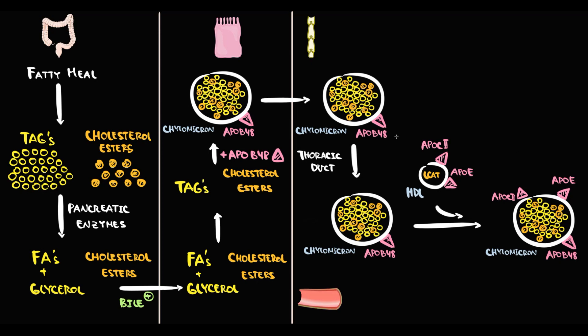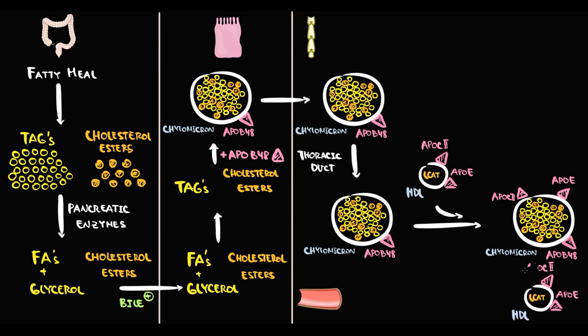Now the chylomicron has three apoproteins on its surface: ApoB48, ApoC2, and ApoE.